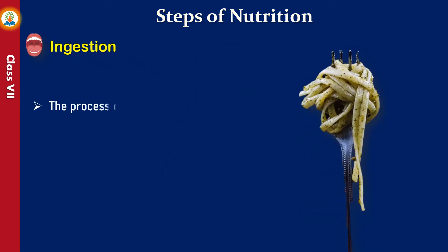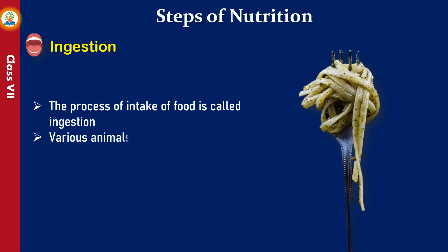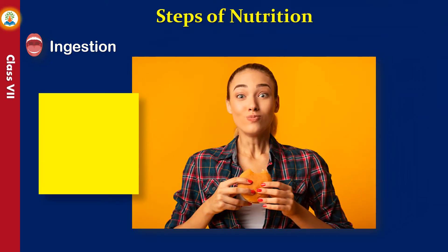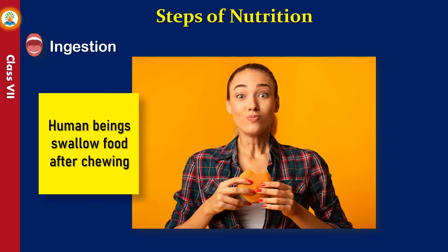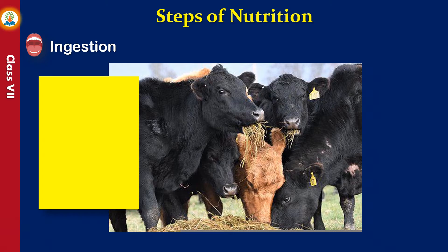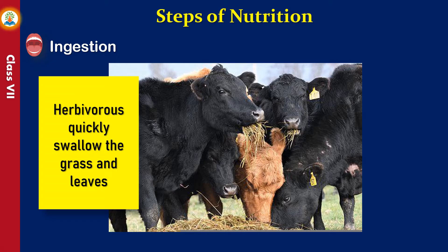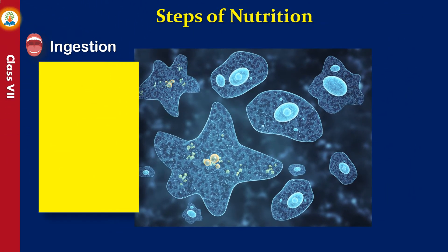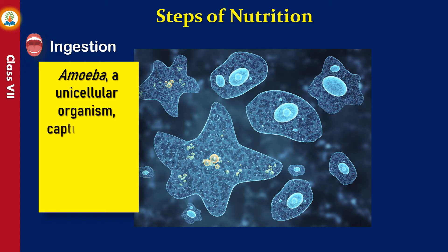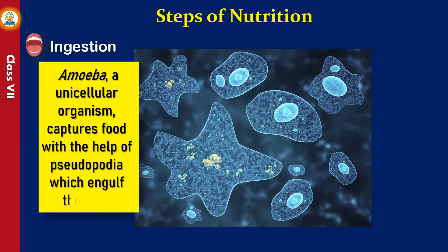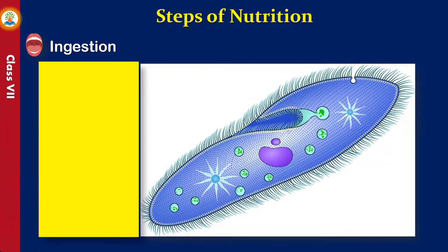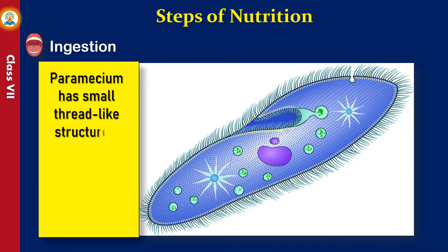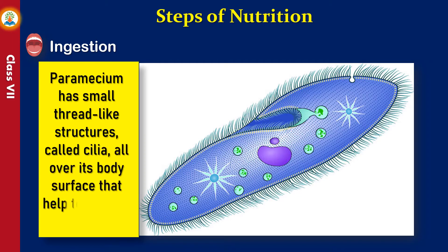The process of intake of food is called ingestion. Various animals have different organs for ingestion of food. Human beings swallow food after chewing. Herbivores quickly swallow the grass and leaves. Amoeba, a unicellular organism, captures food with the help of pseudopodia, which engulf the prey. Paramecium has small thread-like structures called cilia all over its body surface that help to capture food.